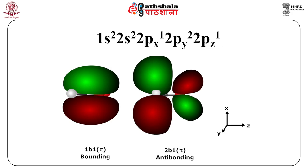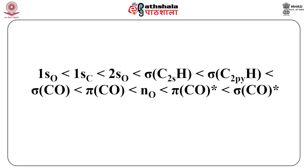Oxygen bonds with carbon using the 2pz orbital for a σ bond (in-plane) and the 2px orbital for a π bond. The electron arrangement on oxygen is 1s², 2s², 2px¹, 2py², 2pz¹. Since there are no available electrons in the 2py orbital of carbon to bond with oxygen, the 2py² electron pair on oxygen is non-bonding. Where there is orbital overlap there is a bonding orbital, and where there is no delocalization there is an anti-bonding orbital.